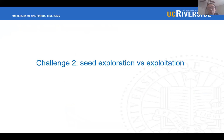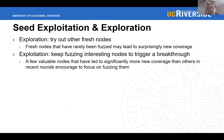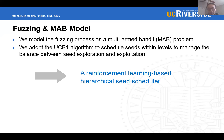The second challenge is how to prioritize nodes during scheduling — in other words, how to strike a balance between seed exploration and exploitation. Seed exploration is to try out other fresh seeds, since seeds that have rarely been fuzzed may lead to surprisingly new coverage. Seed exploitation is to keep fuzzing interesting nodes, since a few valuable seeds that have led to significantly more new coverage should be encouraged. To this end, we model the fuzzing process as a multi-armed bandit problem and adopt the Upper Confidence Bound 1 (UCB1) algorithm to schedule seeds within levels to manage the balance between seed exploration and exploitation.